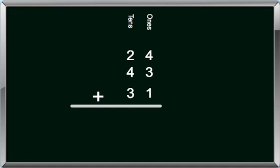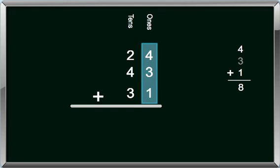Let's take a look at our example. In our ones column, we have 4, 3, and 1. Let's add those together. When we add 4 plus 3 plus 1, we get 8. That number goes at the bottom of our ones column.